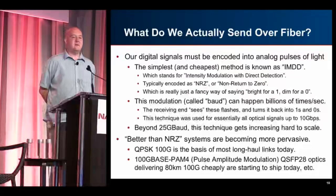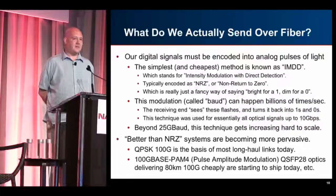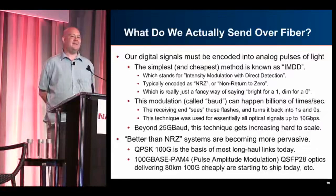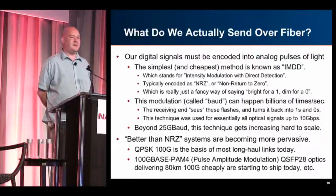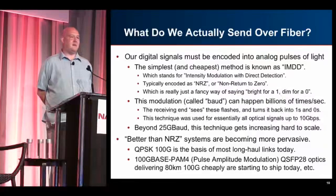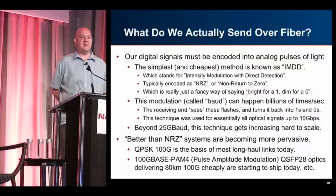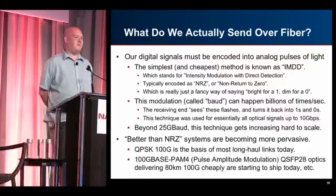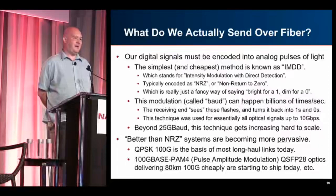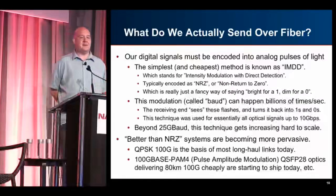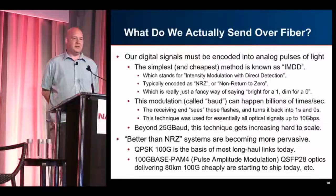What do we actually send over the fiber? We're taking digital signals and encoding them into analog pulses of light. Historically the simplest way is called IMDD — intensity modulation with direct detection, or just direct detection. In fiber this typically uses NRZ — non-return-to-zero — which is basically: bright for a one and dim for a zero. It's literally Morse code with bright and dim flashes done many billions of times per second. The modulation rate — the symbol change — is called baud and can happen billions of times a second.